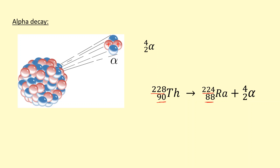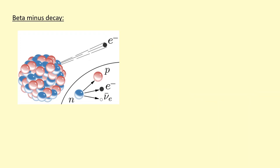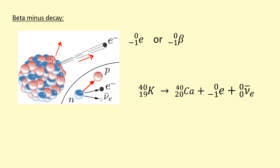Another possible decay is beta minus decay. This tends to happen when the nucleus has too many neutrons, and a neutron inside the nucleus turns into a proton. This proton stays inside the nucleus, however a fast-moving electron is ejected out, and to conserve lepton number, an electron antineutrino is also emitted. A beta particle is just a fast-moving electron — its mass number is zero and it has a negative one charge. Here's an example: potassium decays into calcium. The number of protons increases, but the mass number doesn't change because a neutron has turned into a proton, so the total number of nucleons stays the same.